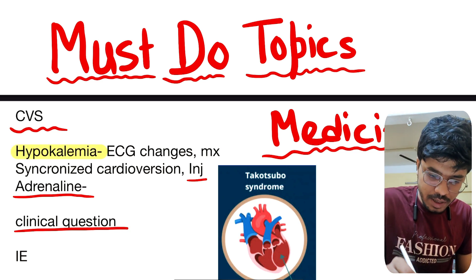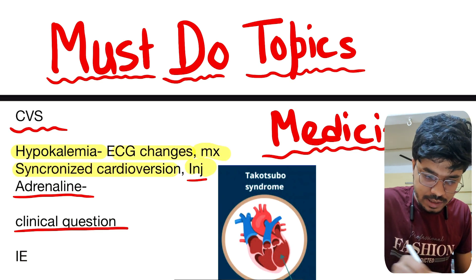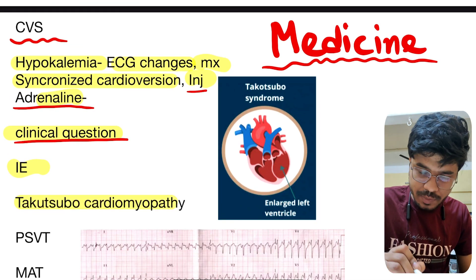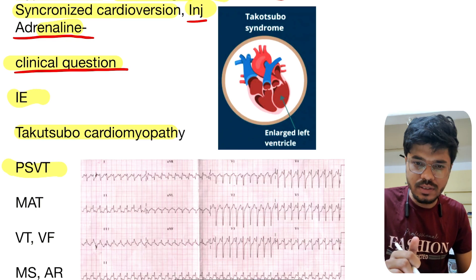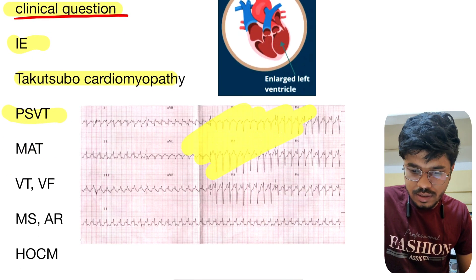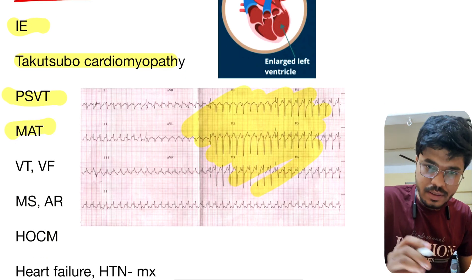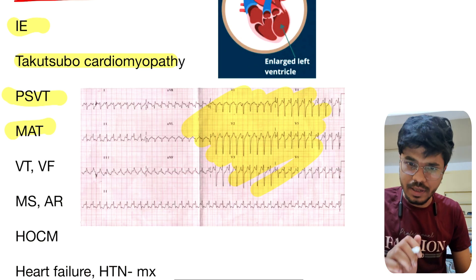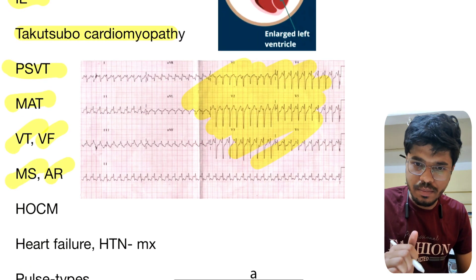In CVS: hypokalemia ECG changes and management, synchronized cardioversion, injection adrenaline. Infective endocarditis, Takotsubo cardiomyopathy or broken heart syndrome, PSVT — ECG changes, diagnosis and treatment — very very important. This is the ECG of PSVT. MAT — multifocal atrial tachycardia — very very important ECG changes. VT and VF are also very important.